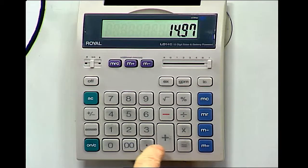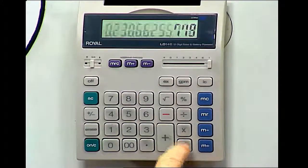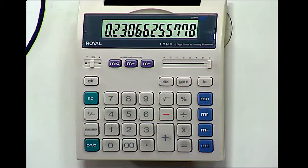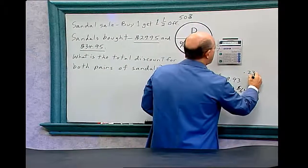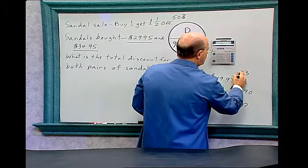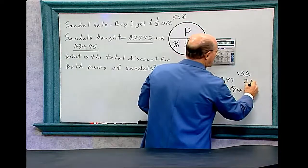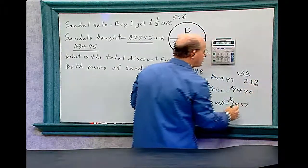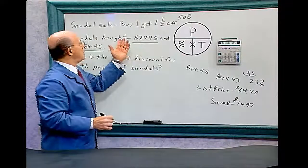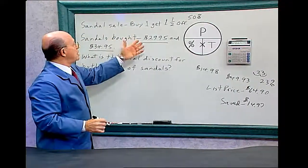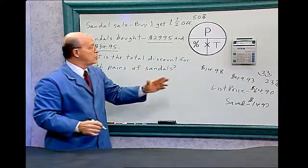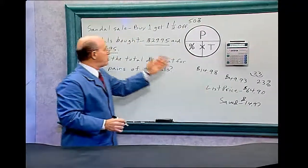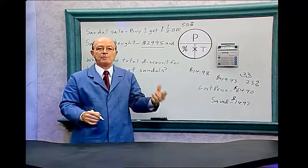Divide $14.97 by $64.90 and the answer is 0.23. Moving the decimal gives us 23%. So when you're buying two sandals and you buy one and get the other at half off, you're really only saving 23%. If they were equal in price, it would be 25%.